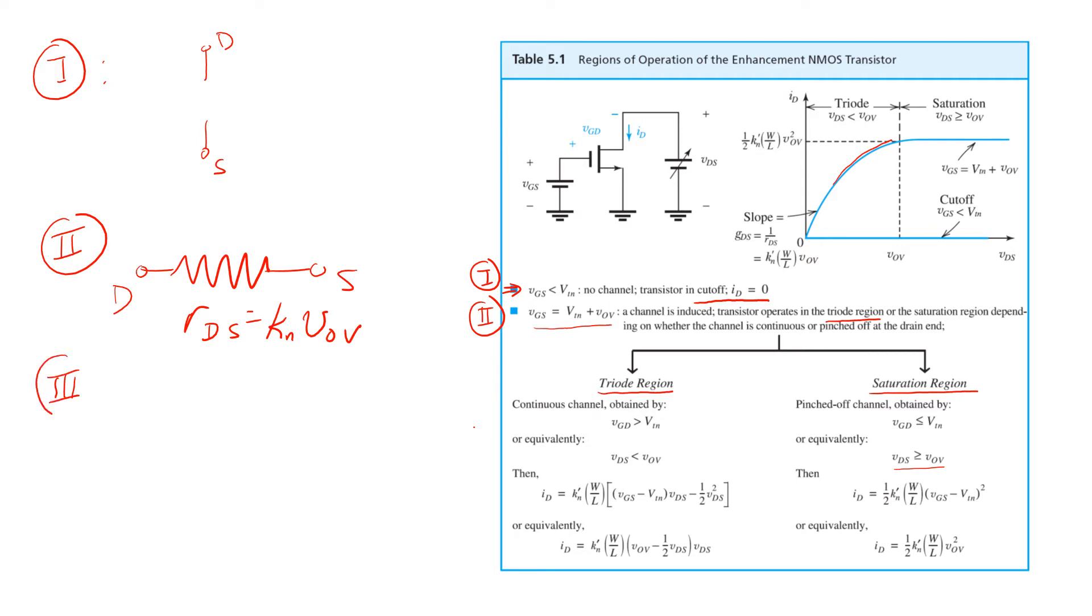In such cases, a simple model is the square law model, shown here. Now, for added accuracy, we can take into account the finite output resistance as well. And that would just take into account the slope on the IV characteristic once in saturation.